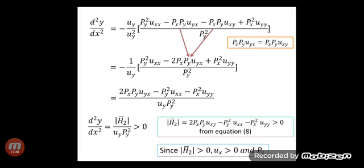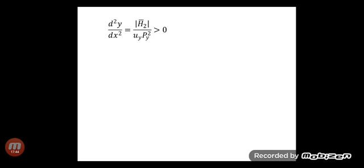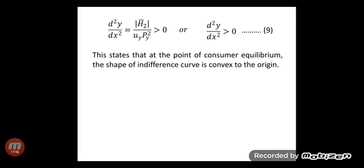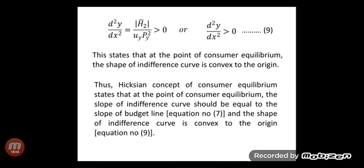Since the bordered Hessian determinant H̄₂ is greater than 0 and the marginal utilities of x and y and the price of x are all positive, d²y/dx² > 0, which is equation number 9. This states that at the point of consumer's equilibrium, the shape of the indifference curve is convex to the origin. Thus, the Hicksian concept of consumer's equilibrium requires that the slope of the indifference curve equals the slope of the budget line as given in equation 7, and the indifference curve is convex to the origin as established in equation 9.